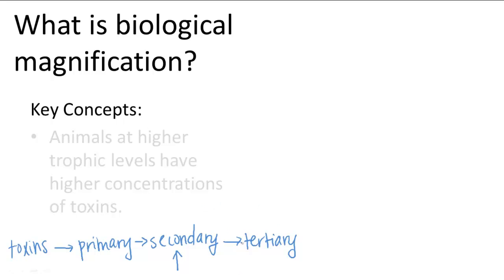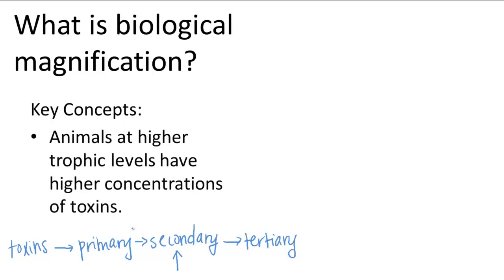A tertiary consumer has higher concentrations of toxins than the secondary consumer, who had higher concentrations than the primary consumer. This building up of toxins at higher trophic levels is called biological magnification.